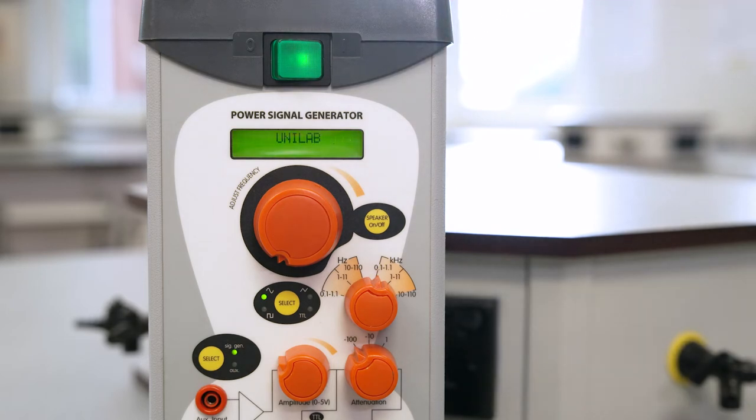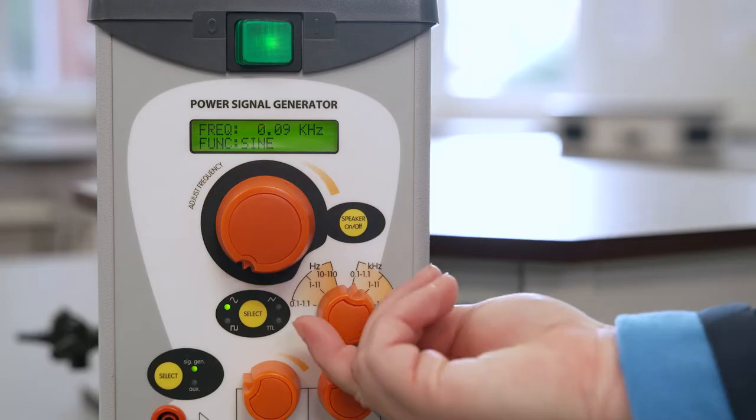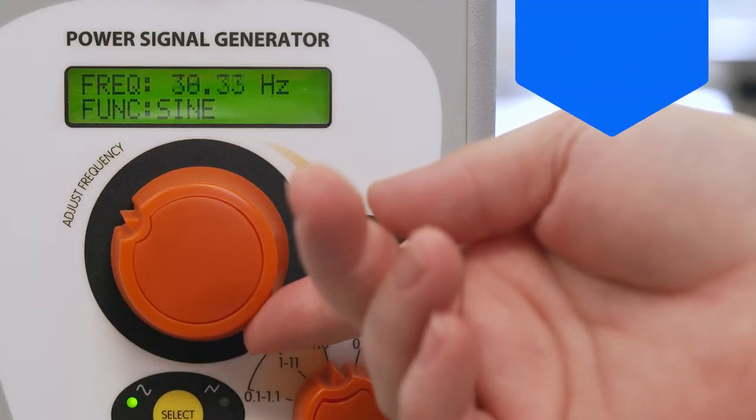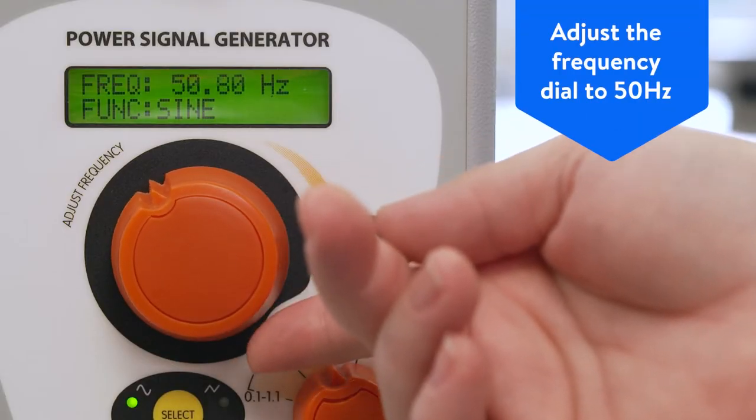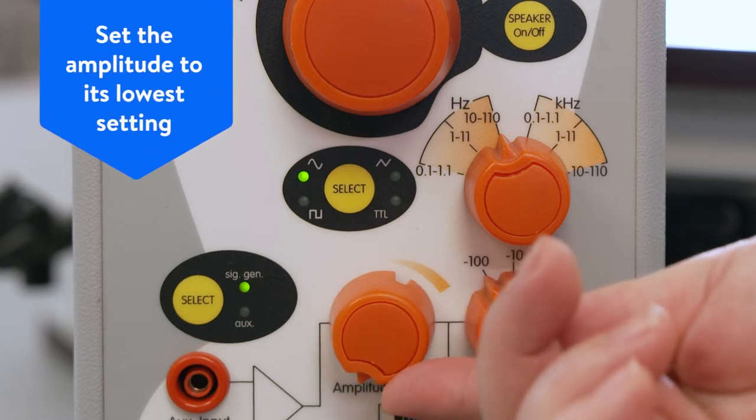Select sine wave and set the frequency selector to 10 to 110 Hertz. Adjust the large frequency dial to around 50 Hertz with the amplitude selector set as low as it will go.